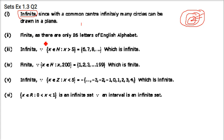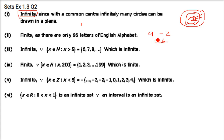Next one is the set of letters of the English alphabet. We know it starts from A and goes up to Z — those are 26 letters. So the set of letters of the English alphabet is finite; you can count them.